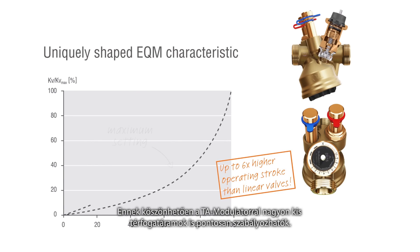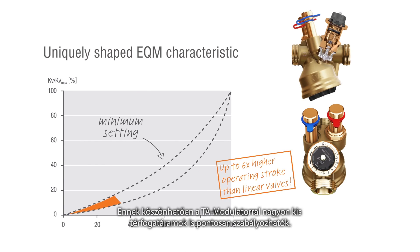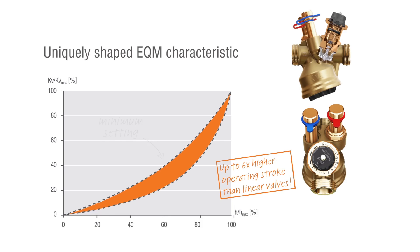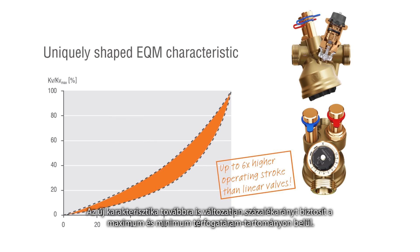Therefore, TA Modulator is able to precisely control also very small flows. The new characteristic remains equal percentage within the range of maximum and minimum flow settings.